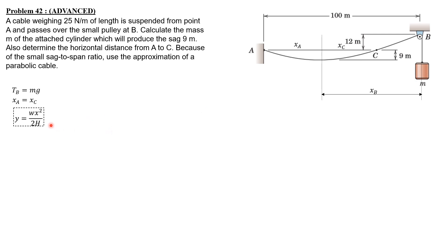Y_A equals 9, so 9 equals W which is 25 times X_A squared over 2H. Therefore H equals 25 over 18 X_A squared. Let's call this equation 1. Likewise, we have Y_B which is 9 plus 12 equals 21, so 21 equals 25 X_B squared over 2H.